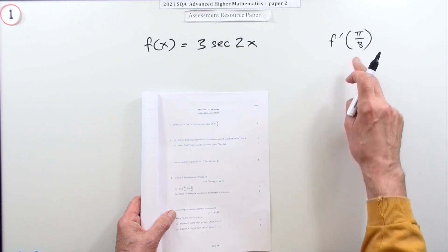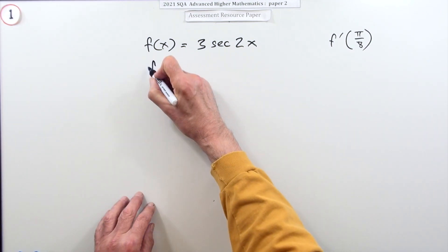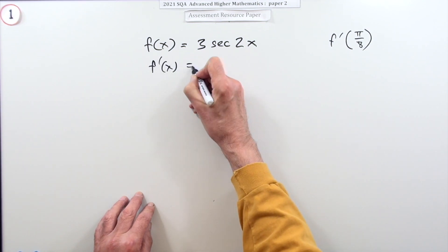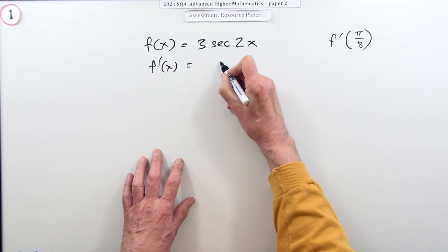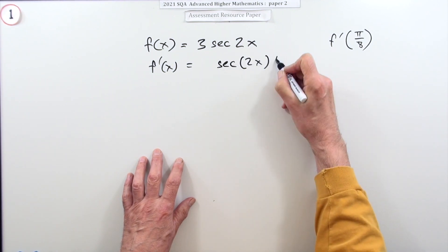If you don't remember it, just look up the front. That goes to sec tan, so it'll still be a three, but that'll go to sec of whatever tan of whatever.